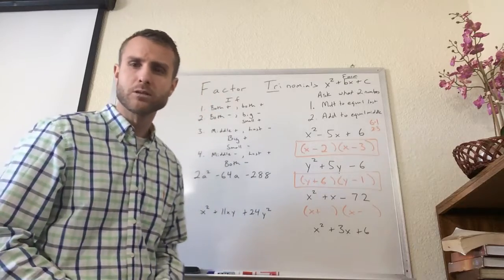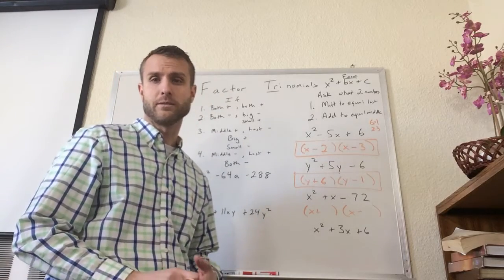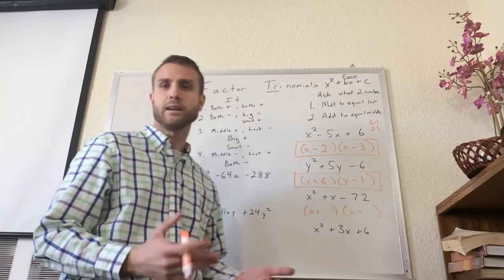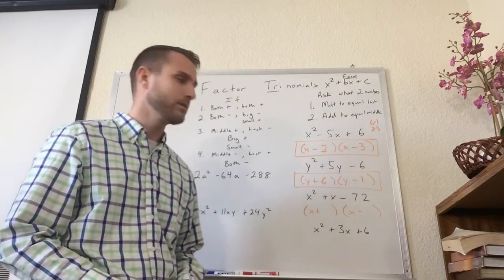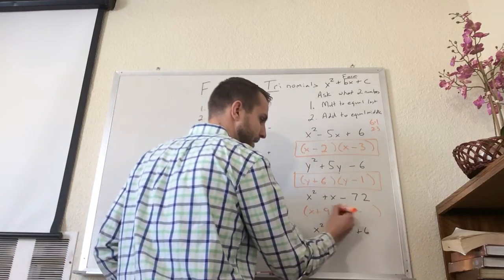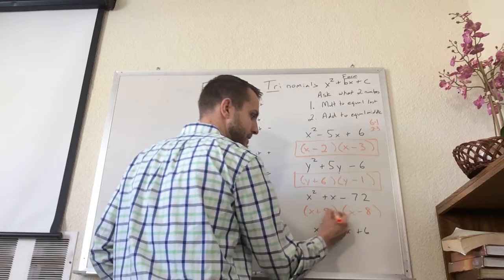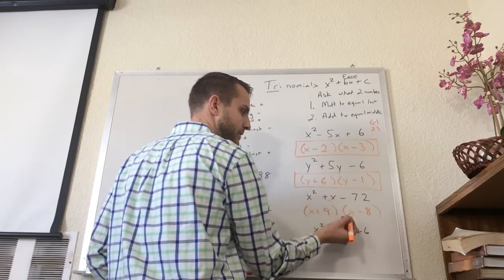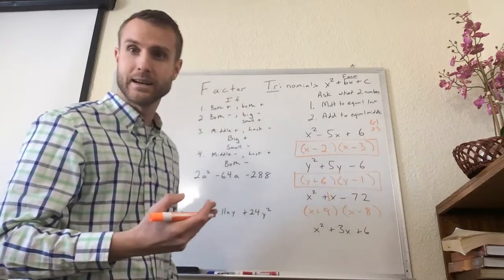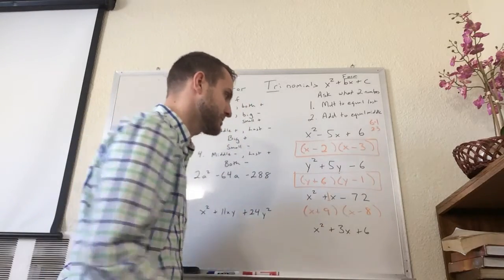Now I have to think through my factors of 72. What numbers multiply together to equal 72? Well, probably one of the first things you think of when you think of 72 is 8 and 9. 8 times 9 equals 72. So my bigger number is 9. That's positive. My smaller number is 8. Does 9 minus 8 equal 1? Yes, it does. 9 times negative 8 equals 72.